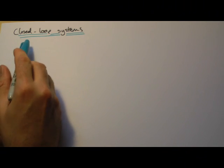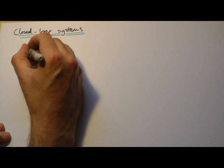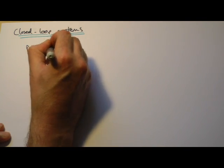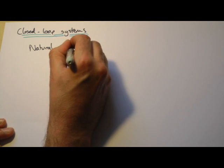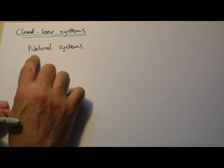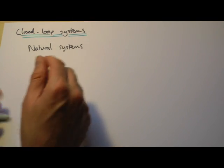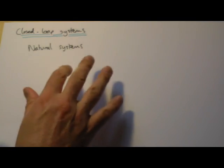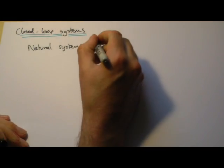This is the second part of linear and closed loop systems. So the closed loop system — a lot of natural systems, though I don't really like using that word because it implies humans aren't part of the natural environment. Of course we are, but we'll stick with this word anyway. Natural systems, natural ecosystems, are closed loops.